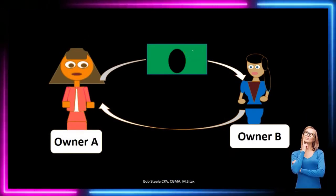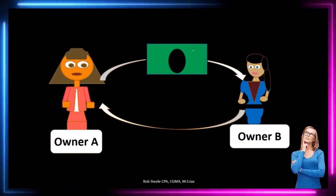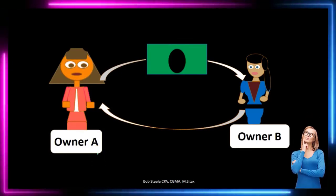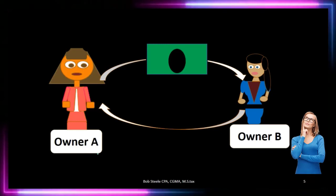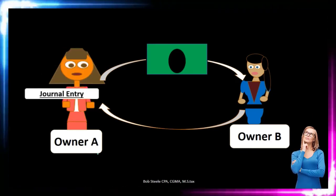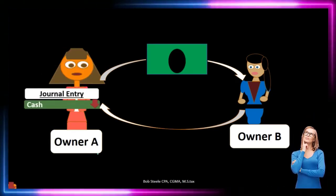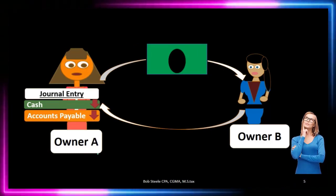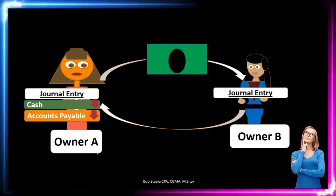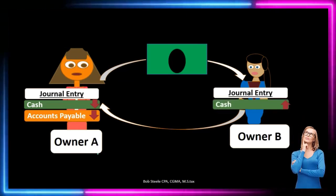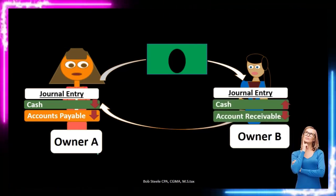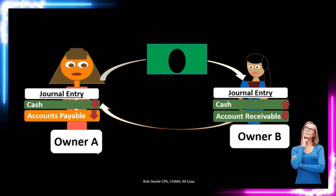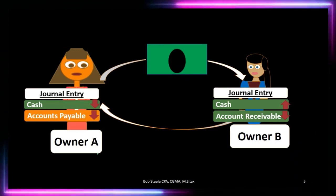Finally, Owner A owes Owner B money for the inventory received, so Owner A pays at that point in time. Owner A's journal entry shows cash going down and accounts payable going down — the liability is eliminated. Owner B the seller records cash going up as it has now been received, and accounts receivable goes down, since the amount owed on the books has now been collected. One asset, cash, goes up while the other asset, the receivable, goes down.